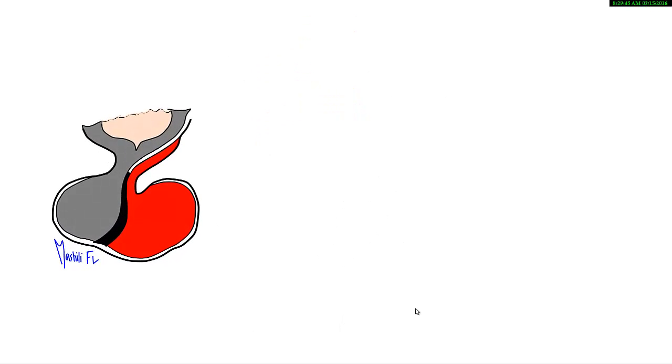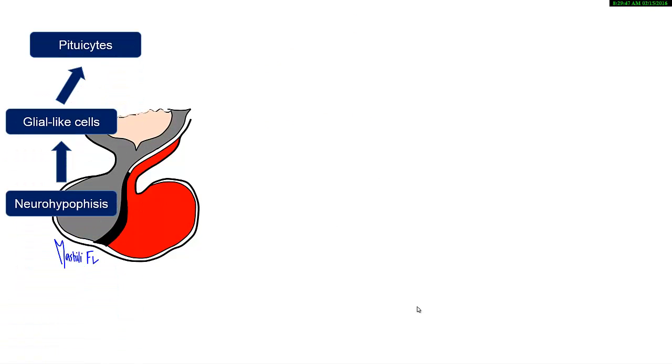The posterior pituitary is also known as the neurohypophysis. The anterior pituitary is known as the adenohypophysis because it is made up of glandular cells. The posterior pituitary is made up of neural-like cells, which are also known as glial-like cells. The embryologic origin of the posterior pituitary originates from neural-like cells.